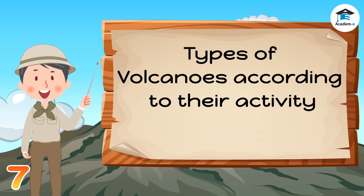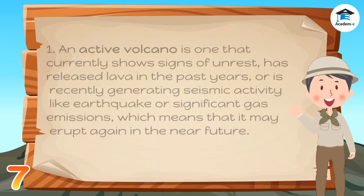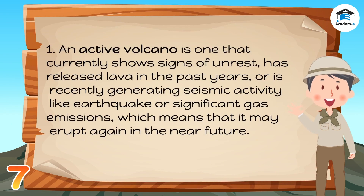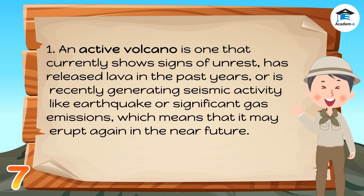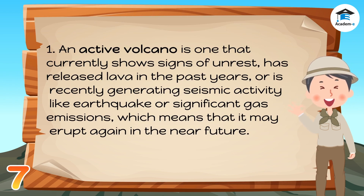Volcanoes can be active, dormant, or extinct depending on the possibility that they will erupt. An active volcano is one that currently shows signs of unrest, has released lava in the past years, or is recently generating seismic activity like earthquakes or significant gas emissions, which means that it may erupt again in the near future.